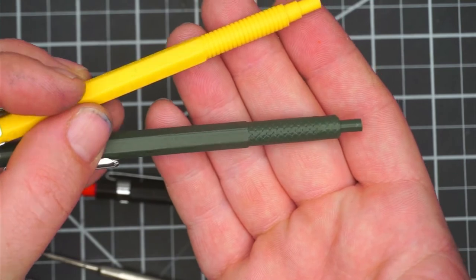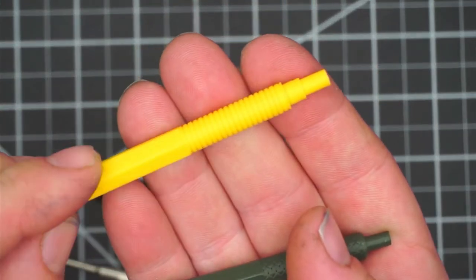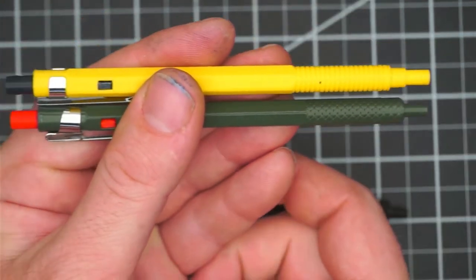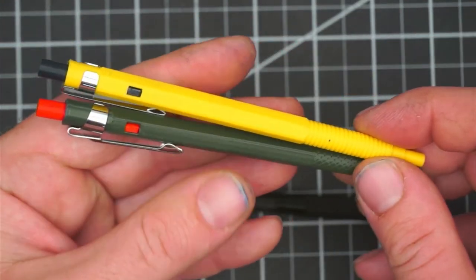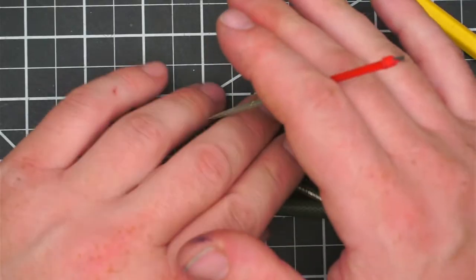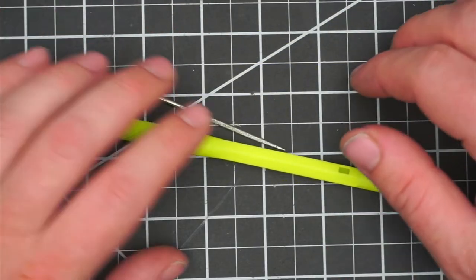And then there's also this ridged version. We make them in Parker G2 and Fisher style. Let's take a look at what's inside of one of these pens. I'll show you how to prepare the part to make a pen out of it.